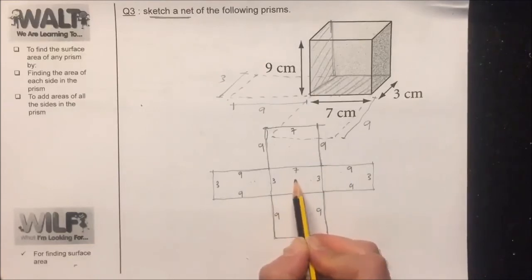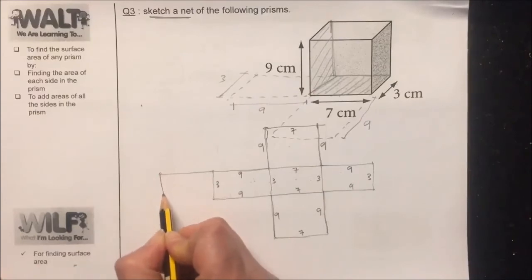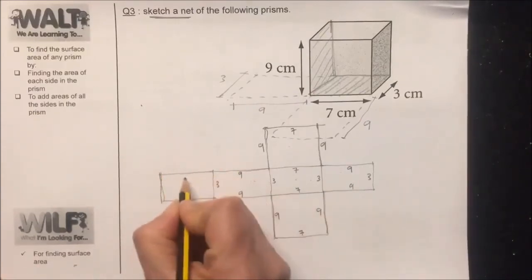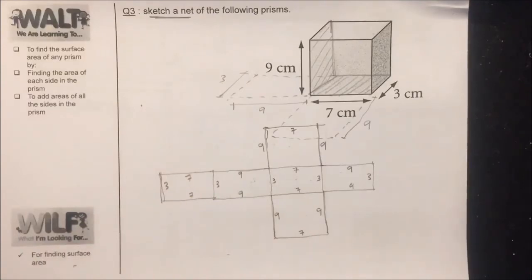So you're going to put it from this side with the exact same dimensions: 7, 7. If this is 3, this is 3. So this is our net.